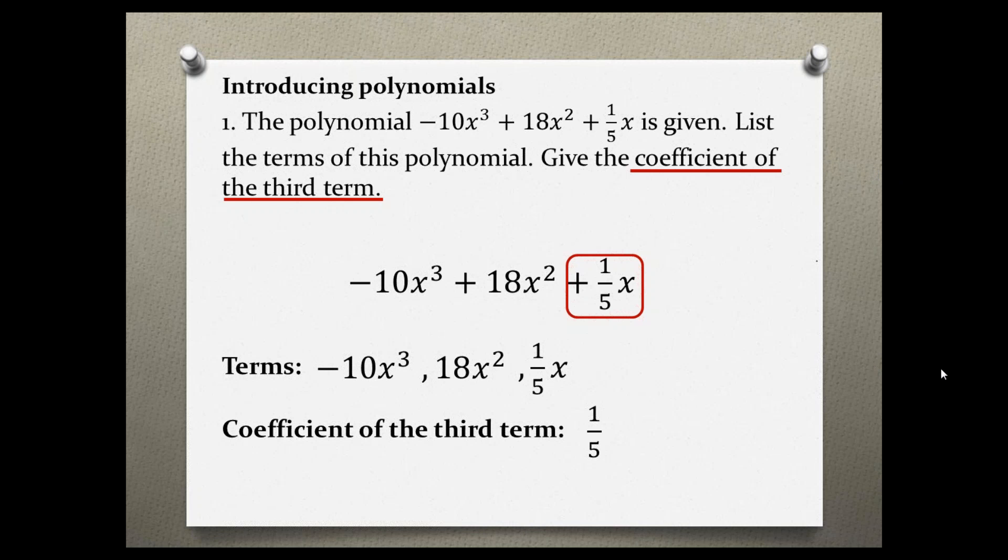If there is a case that the term only consists of a variable, you still have a numeric value in front of that variable, which you can assume is one, which we always call an imaginary one because you don't necessarily have to write it.